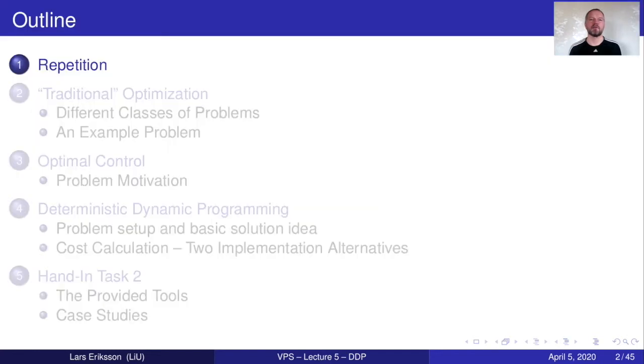In the lecture we will repeat the material then we'll talk a little bit about optimization and what's the difference between traditional optimization and optimal control. In hand-in number two you will work with deterministic dynamic programming that is an offline control methodology. It can be used for online control also but it is mostly used to investigate different properties of optimal control problems.